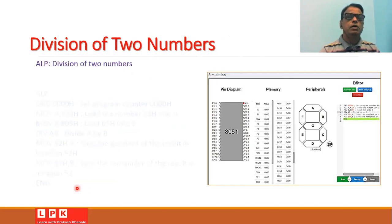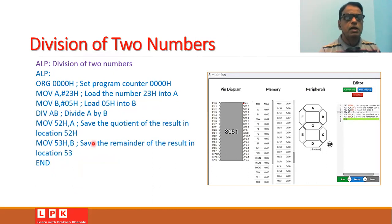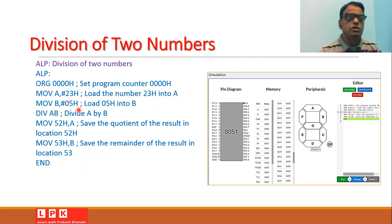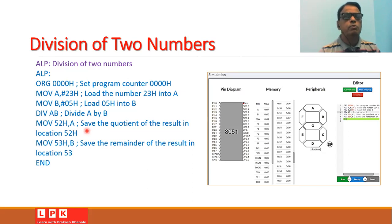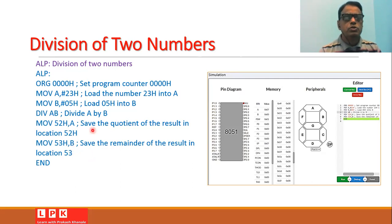Now let us go for the division of two numbers. We set the program counter to 0000h, then load the number 23h into the accumulator using MOV A, #23h, and load 05h into register B using MOV B, #05h. We divide A by B using the instruction DIV AB. The quotient is moved to location 502h using MOV 502h, A, and the remainder is saved to location 503h using MOV 503h, B.